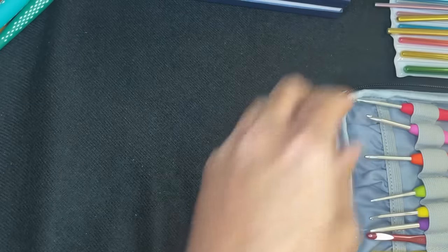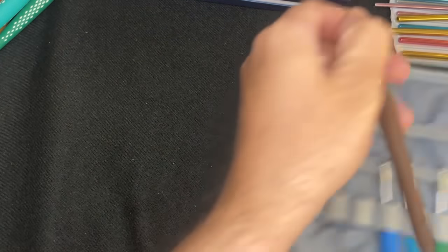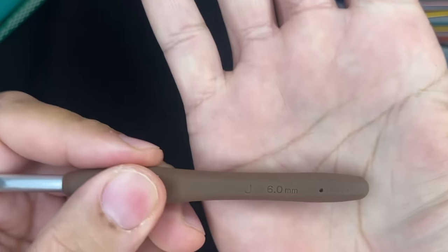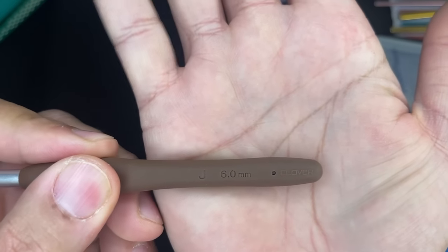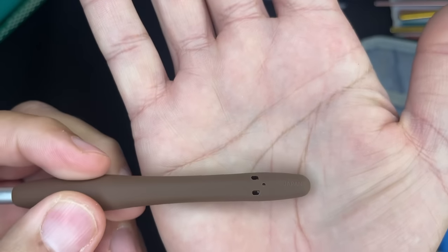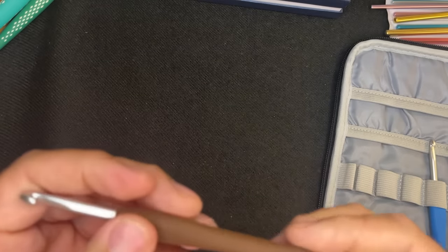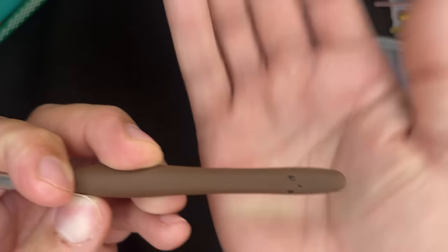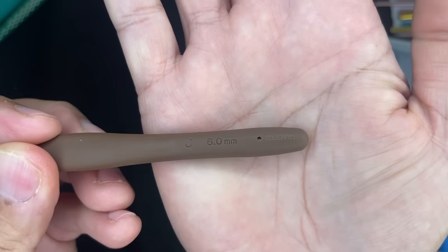Another honorable mention are the Clover Amore hooks. So I have the full, complete set. I just pulled out the six millimeter hook. You should be able to see it on the handle there. Clover, six millimeter, US J. And you have the three holes in the back. There are a lot of imitations out there. You just want to make sure that the holes are there. And Japan. They're made in Japan.